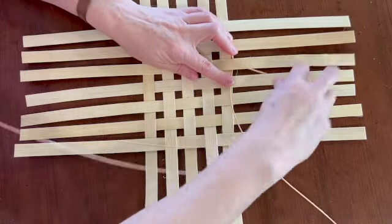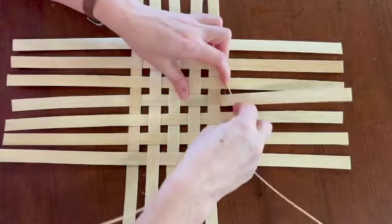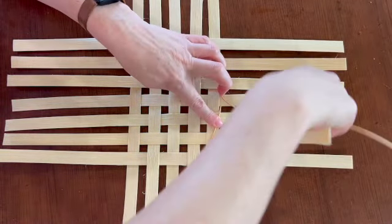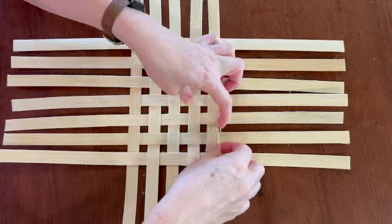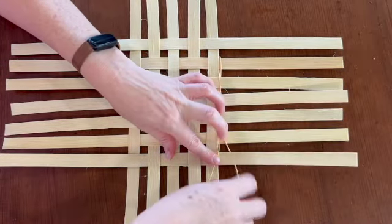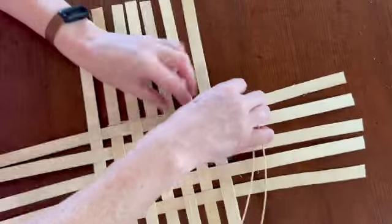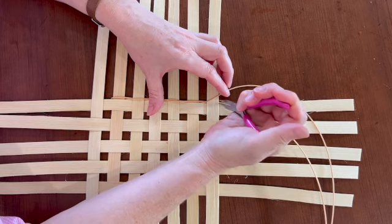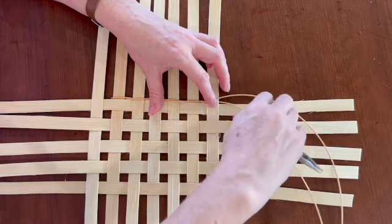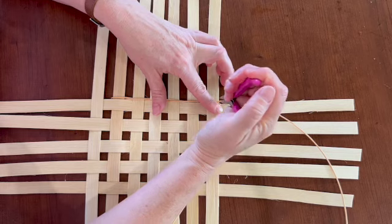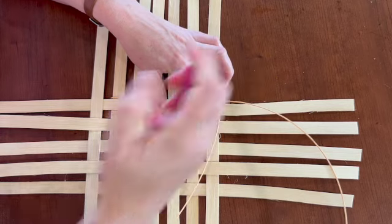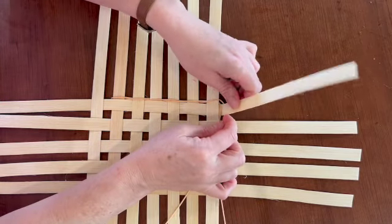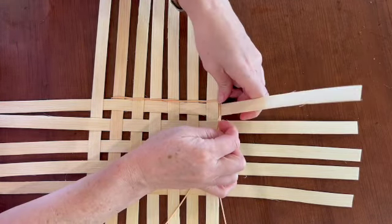You go from the front to the back. Every time, whatever strand is in the front goes behind the next spoke. When you get to the corner, you're going to do the same thing around the corner, but pinch those corners so they fold and go behind. This is called twining.